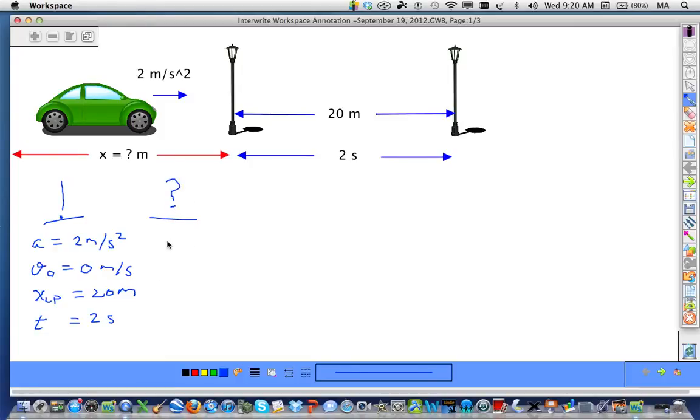On the question side, what is that unknown distance to the left of the left lamppost where the car began at rest, traveling at a constant acceleration of 2 meters per second squared?